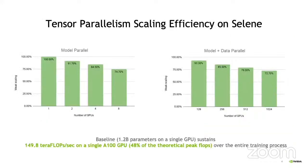We can now look at how well Megatron scales on Selene, which is our in-house supercomputer made up of nodes of eight A100 GPUs. When using tensor parallelism alone within a node, the eight-way configuration achieves 75% of the per-GPU throughput that a run with no model parallelism achieves. When we add in data parallelism, we can achieve similar scaling up to over 1,000 GPUs, maintaining close to 50% of the theoretical peak flops across all GPUs. Note that this is averaged across the entire run, not measuring peak throughput.